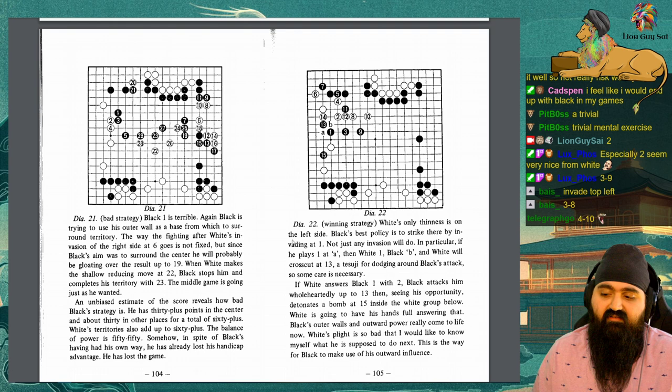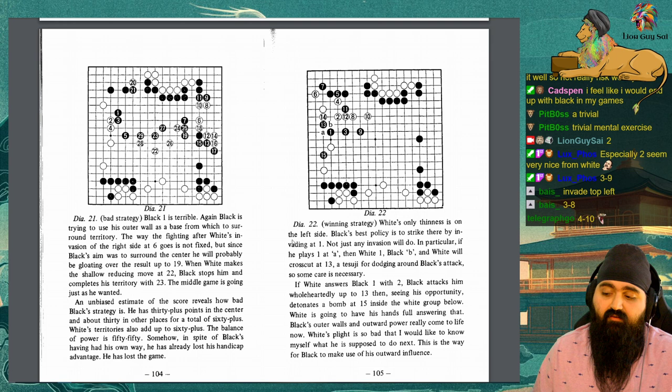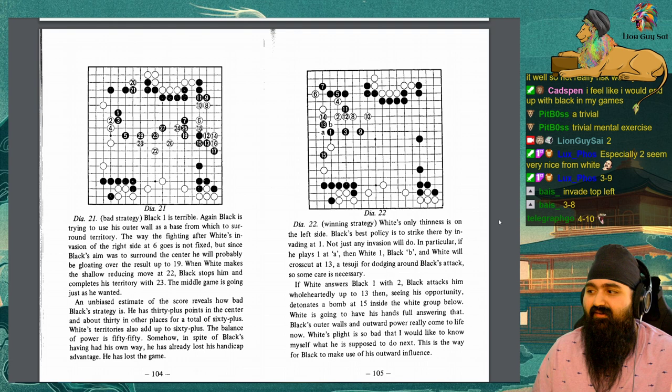An unbiased estimate of the score reveals how bad black's strategy is. He has 30 plus points in the center and about 30 in other places for a total of 60 plus. White's territories also add up to 60 plus. The balance of power is 50-50. Somehow, in spite of black's having had his own way, he has already lost his handicap advantage. He has lost the game.